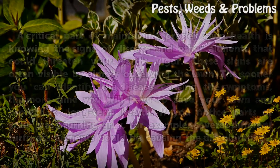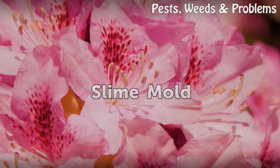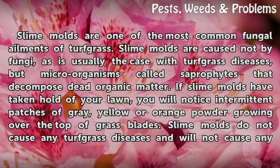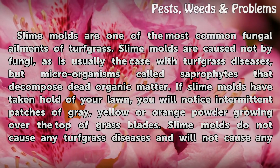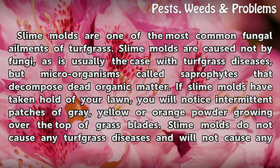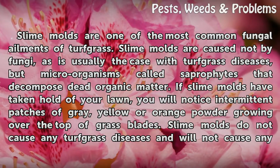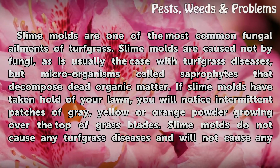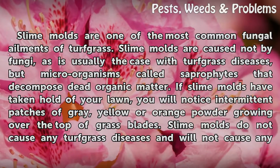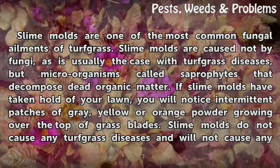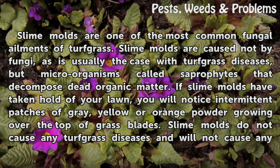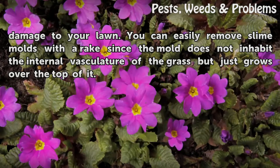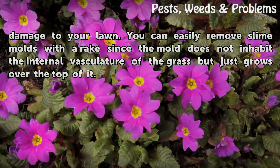If you notice parts of your grass turning gray, several different turfgrass ailments could be causing the discoloration. Slime molds are one of the most common fungal ailments of turfgrass. Slime molds are caused not by fungi, as is usually the case with turfgrass diseases, but by microorganisms called saprophytes that decompose dead organic matter. If slime molds have taken hold of your lawn, you will notice intermittent patches of gray, yellow, or orange powder growing over the top of grass blades. Slime molds do not cause any turfgrass diseases and will not cause any damage to your lawn.